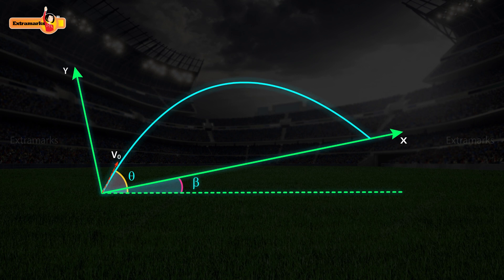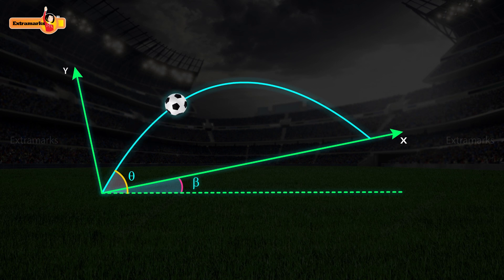Now the velocity results into two components, V0x and V0y. Also the acceleration due to gravity, g, results into two components: gx is equal to g sin beta, and gy is equal to g cos beta.